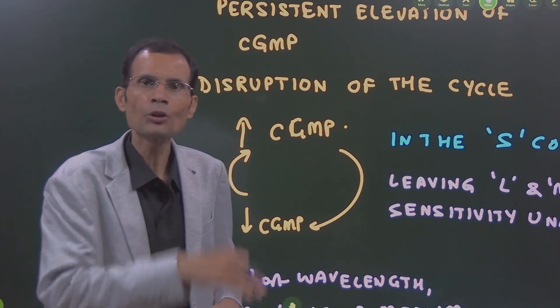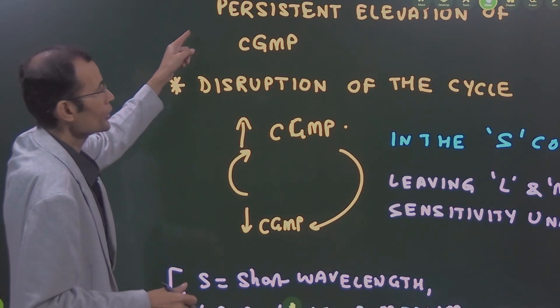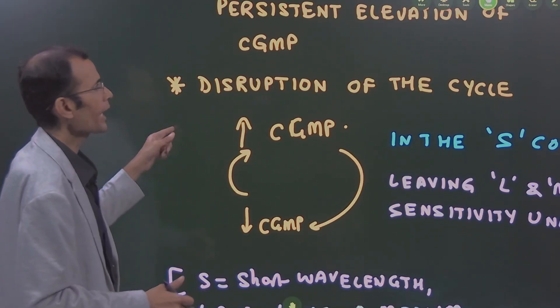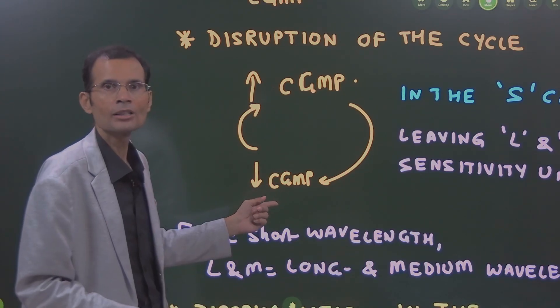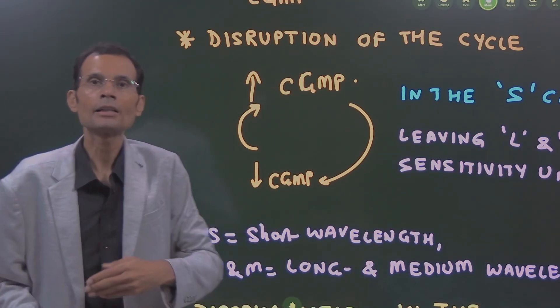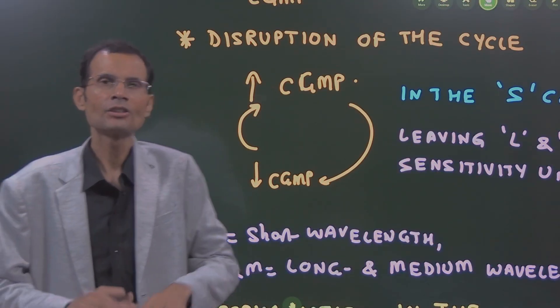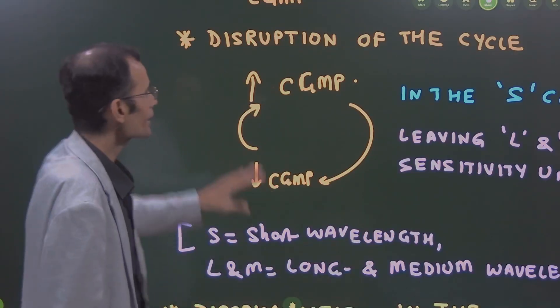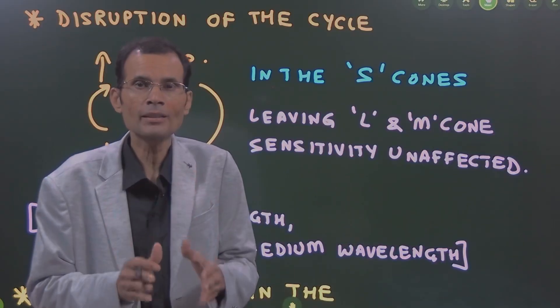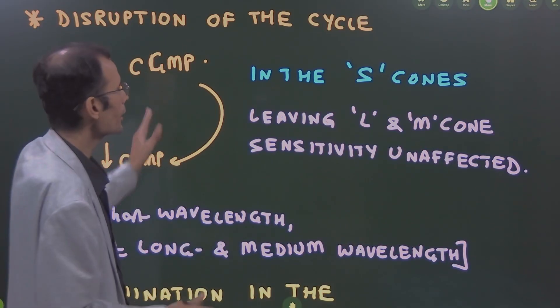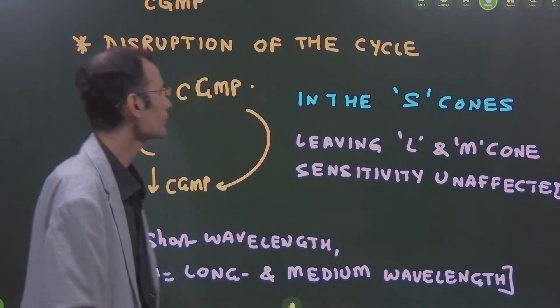This cycle is going on under normal circumstances, but with sildenafil, this cycle will be disrupted. Decreased cyclic GMP levels when the cone is stimulated are normally immediately replenished. But this cycle is disrupted when you give sildenafil, and there will be persistent levels of cyclic GMP because of inhibition of phosphodiesterase enzyme 6, PDE6.